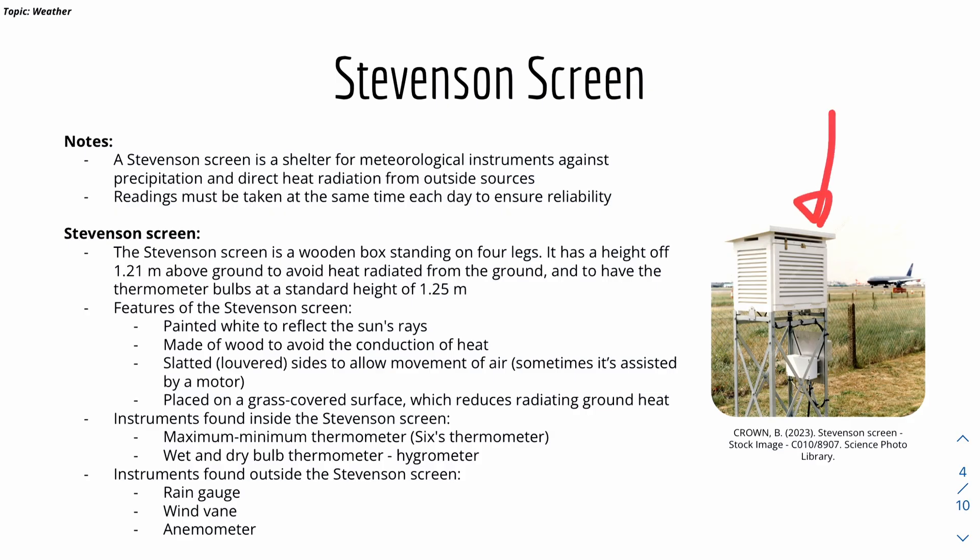Sometimes there's a wind vane up here. A quick note is that the readings must be taken at the same time each day to ensure reliability. Here are some notes and features of the Stevenson screen. It's a wooden box standing on four legs. It has a height of typically 1.21 meter above ground to avoid heat radiation, and avoid heat irradiated from the ground, which will affect the thermometer reading.